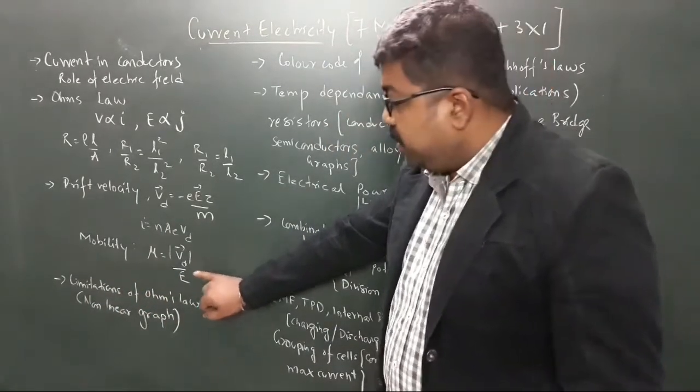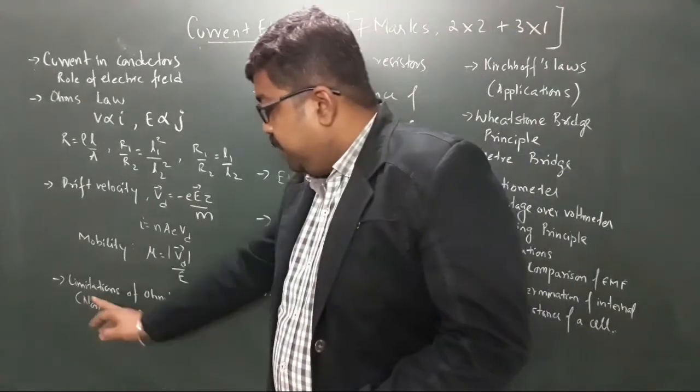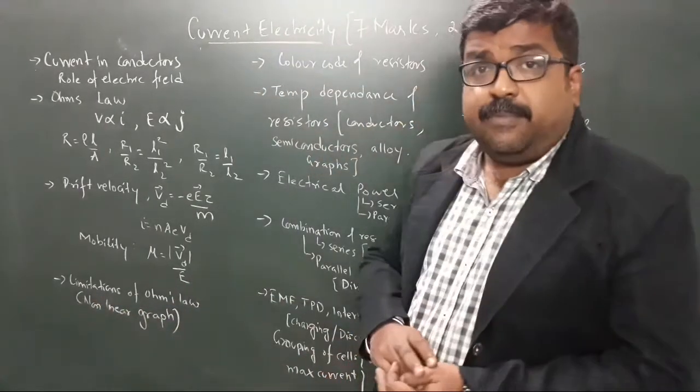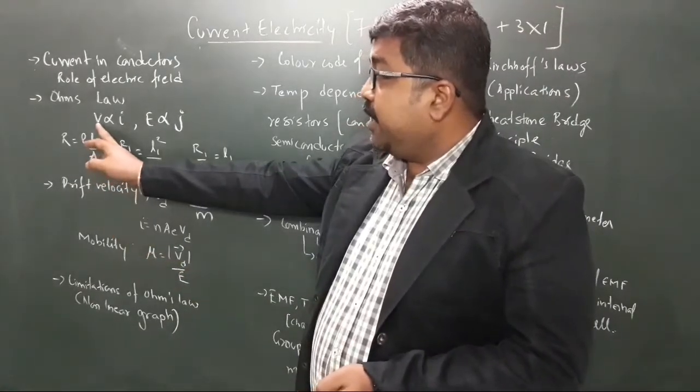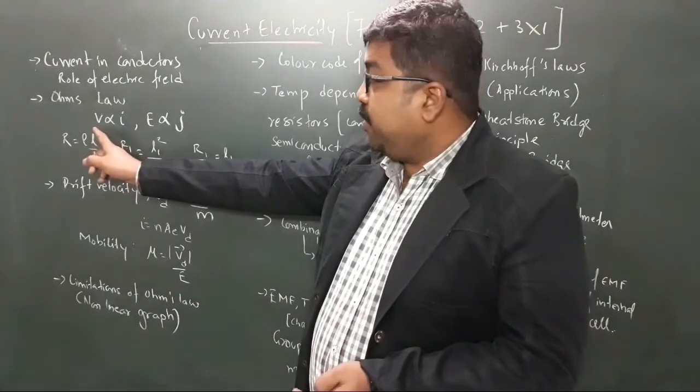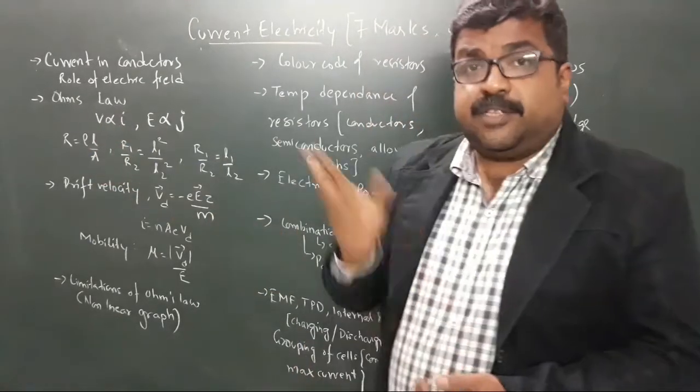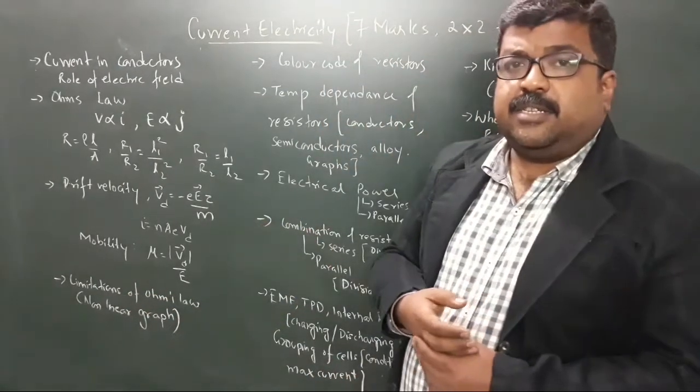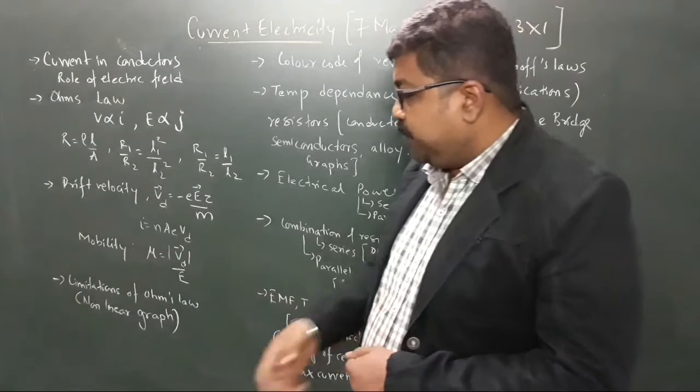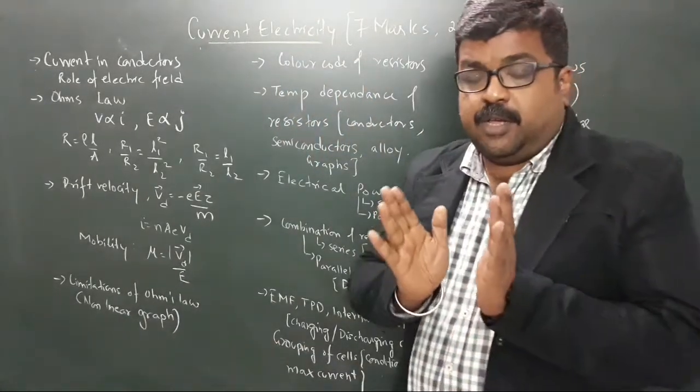After this you have limitations of Ohm's law. Ohm's law gives a direct proportional relationship between voltage and current, so these two quantities are directly proportional and the graph between them will be a straight line. Limitation of Ohm's law means there are various non-ohmic conductors for which you have a non-linear graph; the relation between voltage and current is non-linear.